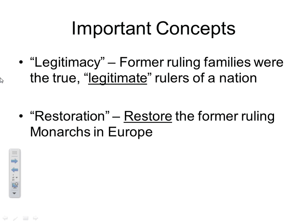Some important concepts with the Congress of Vienna story are legitimacy and restoration. Legitimacy refers to restoring the former ruling families that were deposed or kicked out of power because of the French Revolution and its extension into other nations. We're talking about monarchies — the former monarchies that had been removed from power.